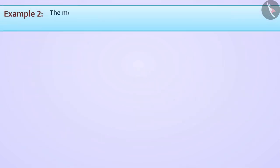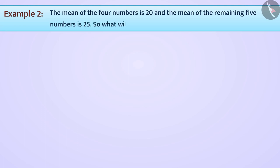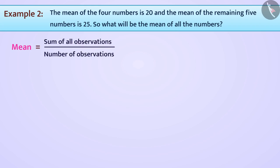Next example. There are 9 numbers provided. Of these 9, the mean of 4 numbers is 20 and the mean of the remaining 5 numbers is 25. Can you derive the mean of all the numbers? Friends, we know that mean is equal to sum of all observations divided by number of observations. We can also say that mean times number of observations is equal to sum of all observations.